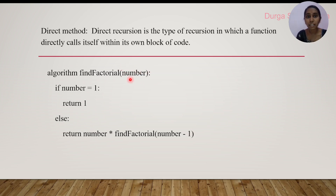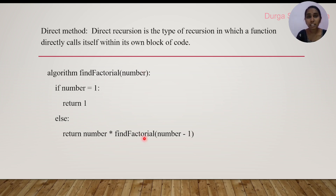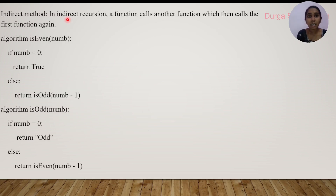For example, passing the number 5: if number equals 1, it returns 1; else it returns number × find_factorial(number − 1). So it calls itself with input 4, then 3, and so on. When number is 5 it will ultimately return 120, since factorial of 5 is 120. This is known as direct recursion.